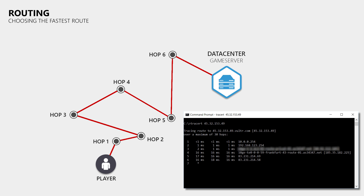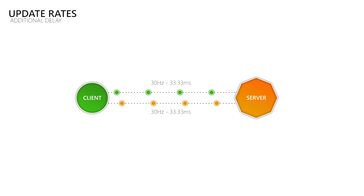So the length of the route that connects the client to the server defines how long it takes data to travel between them. This means that our lag cannot get lower than the ping, since we would have to break the laws of physics to speed up the electrons or photons that are used to communicate with the server. What adds an extra delay on top of the travel time of our data is how frequently we send and receive it. So when we send and receive updates 30 times per second, there is more time between the updates than when we send and receive 60 updates per second. By sending and receiving more updates per second you can decrease the additional delay added on top of the travel time of your data.